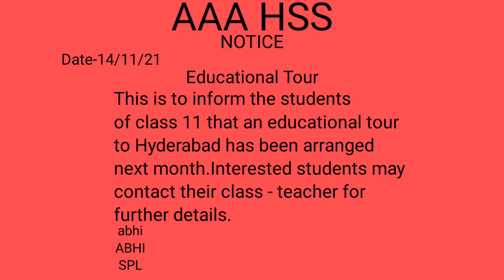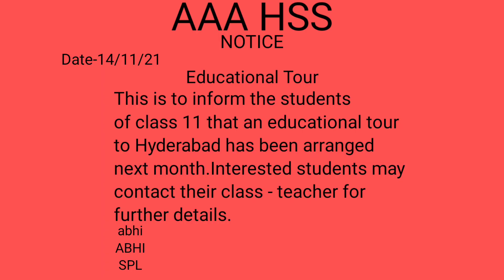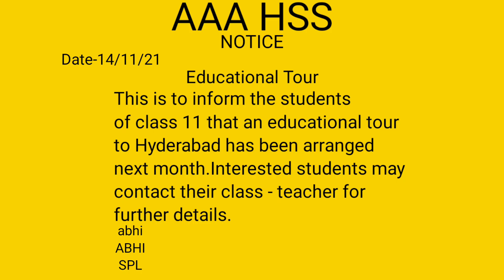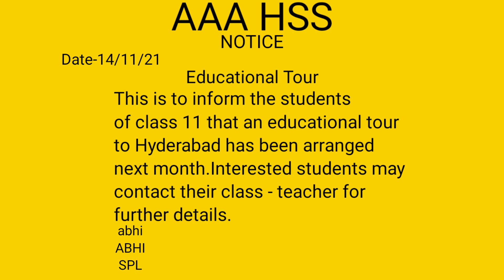That has to be followed by the writer's signature, name in block letters, and designation. If you are the school pupil leader, you will have to write your name and the designation as SPL. Before writing your name and designation, you must sign. After you complete the notice, draw a border line on all four sides of the notice.